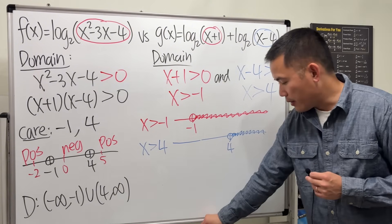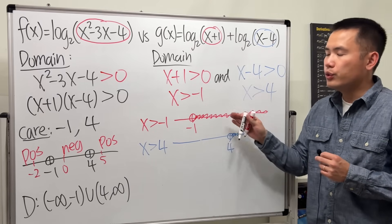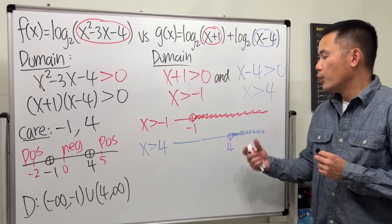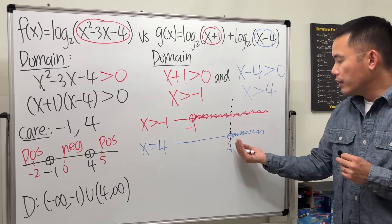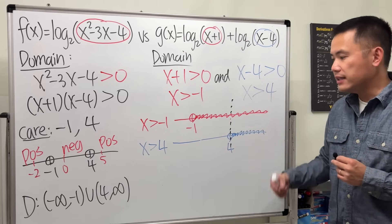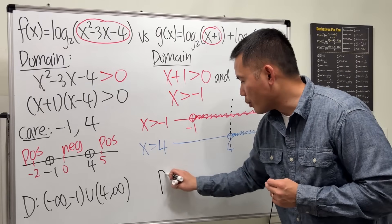Now in order to satisfy these two inequalities at the same time, we will have to look for the product overlap, which is anything bigger than 4, right? And that will be the domain for this function.